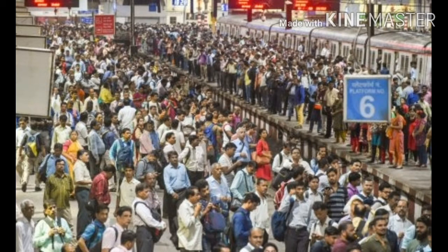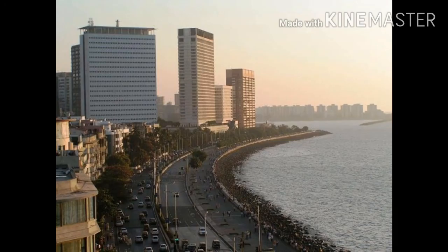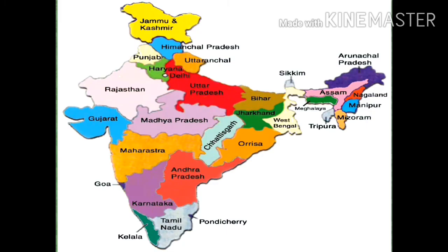At the same time, the urban population is increasing. The expansion of urban centers and the emergence of new towns have played a significant role in this growth. Urbanization has been more in the southern part of India than the northern part. Goa is the most urbanized state with 62% of its population living in urban areas. Delhi is more than 80% urban. States like Tamil Nadu, Maharashtra, Gujarat, and Kerala also have high urbanization. Whereas states like Himachal Pradesh, Jammu and Kashmir, Uttarakhand, Bihar, and Rajasthan have a low level of urbanization.